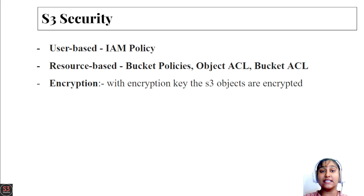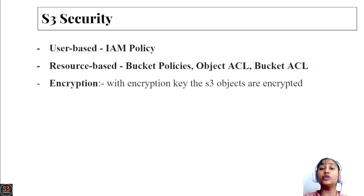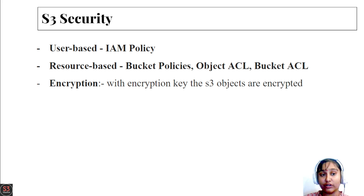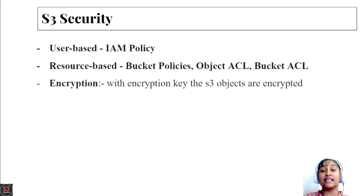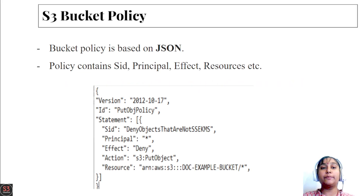In this video, we are going to create a bucket policy and make our bucket publicly accessible so any user can access our objects. If you want to go to object level, you can use Object ACL, and if you want to go to bucket level, you can use Bucket ACL. The most important aspect of security in any form is encryption — with encryption keys we can encrypt our S3 objects.